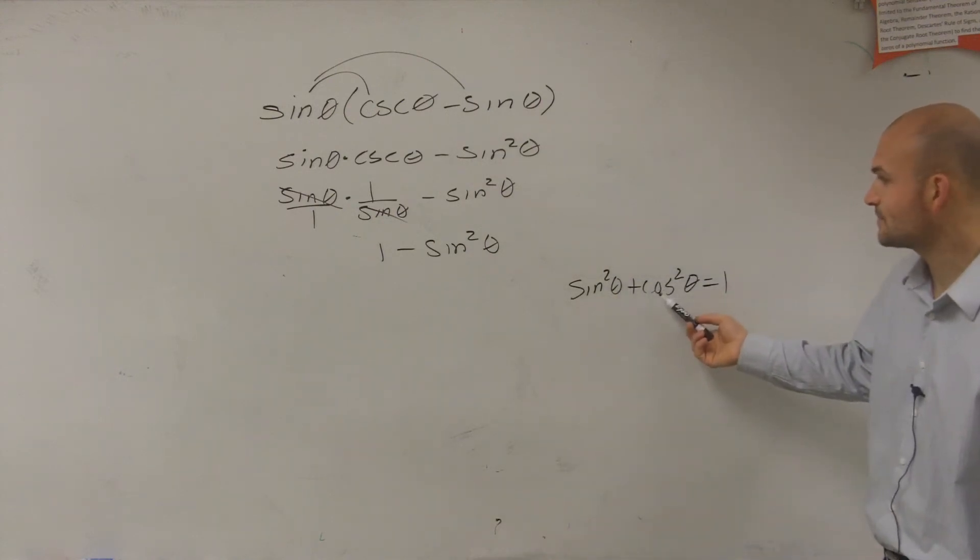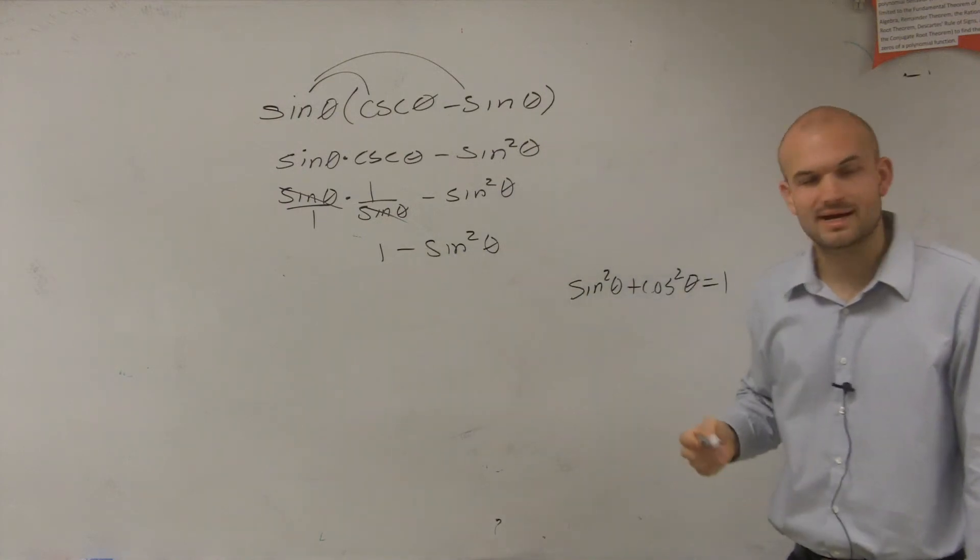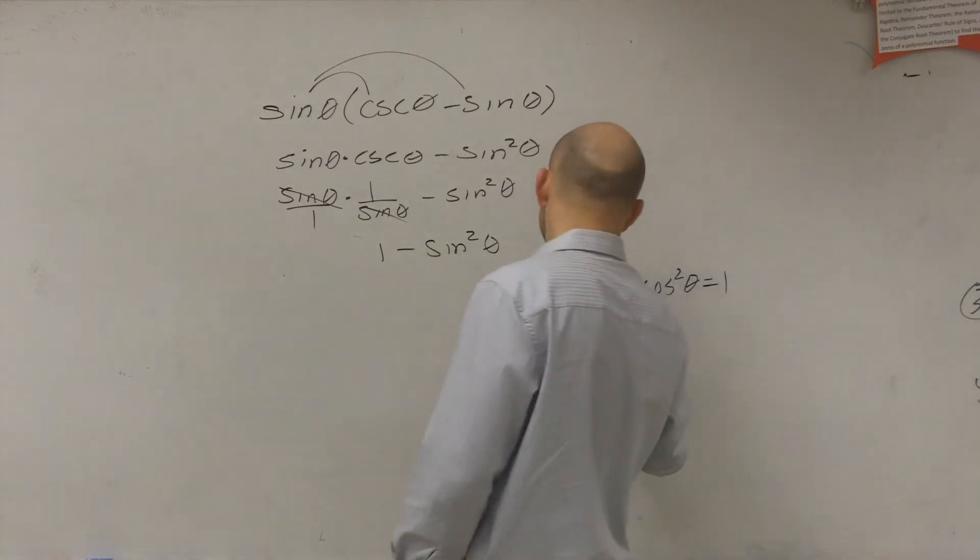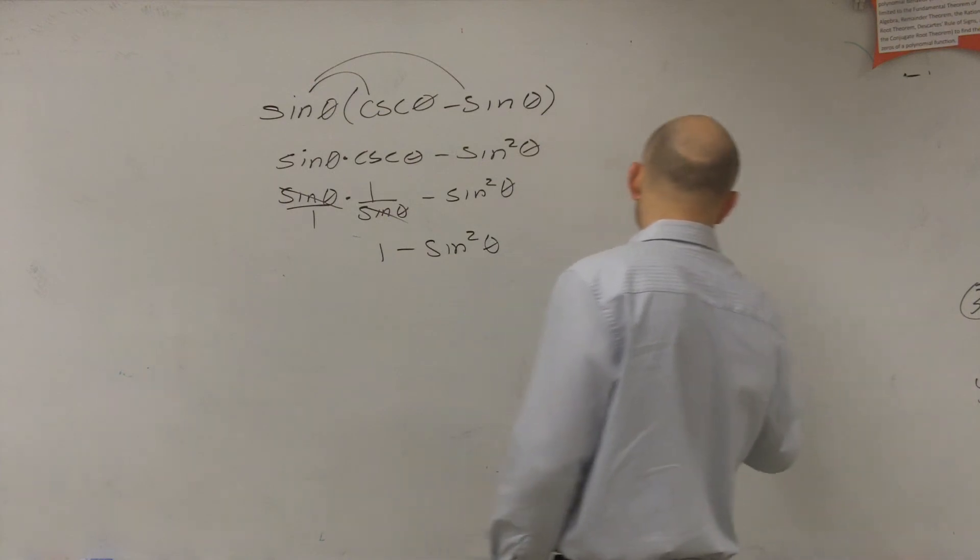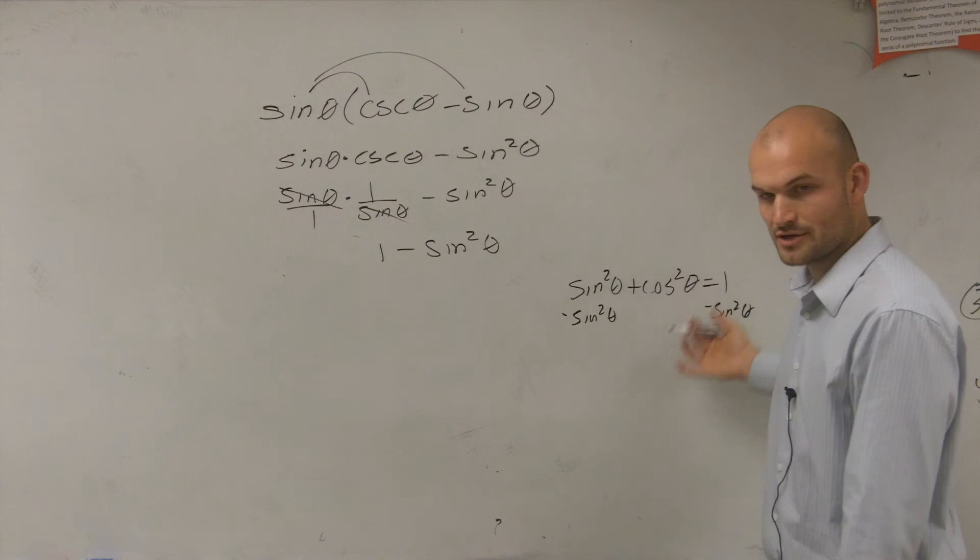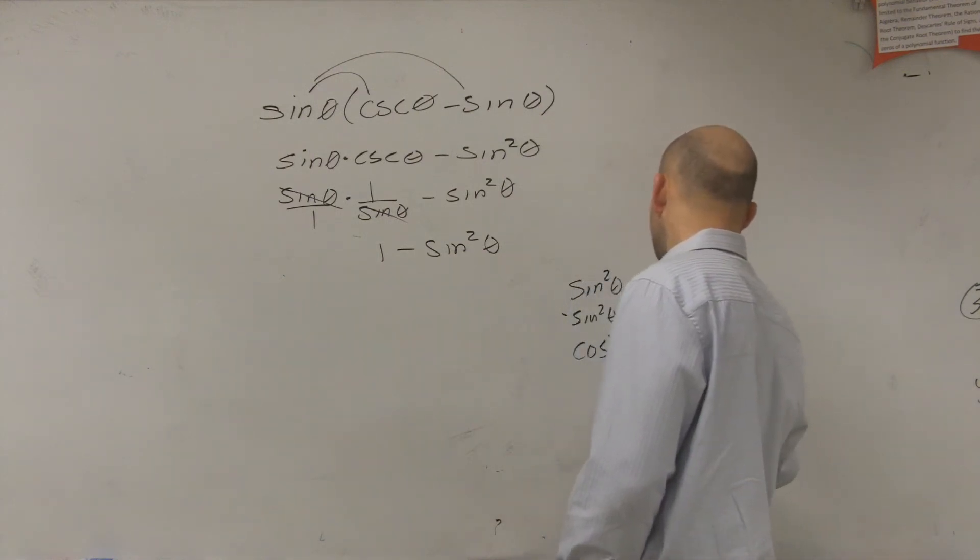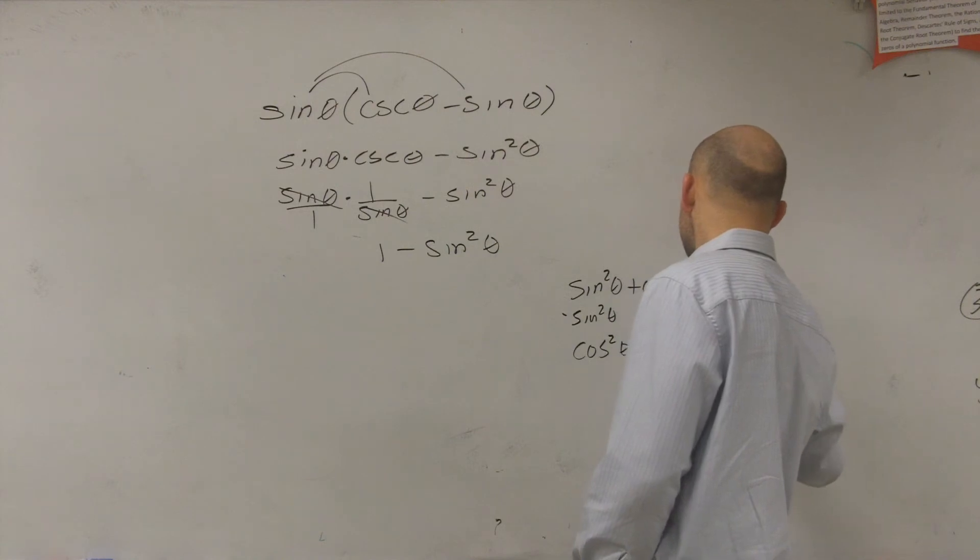If we take a look at this, if we wanted to get a look at where 1 minus sine squared, if I subtract the sine squared of theta on both sides, and since I'm doing subtraction property of equality, subtraction on both sides, it's still going to work. I'm left with cosine squared of theta equals 1 minus sine squared of theta.